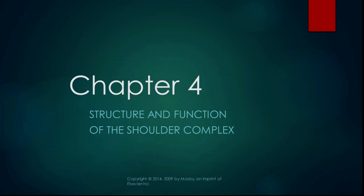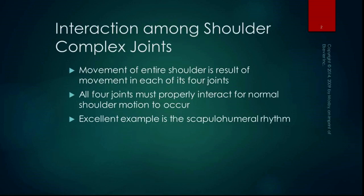This is the last part of the shoulder chapter, where we bring it all together and talk about functional considerations. The movement of the entire shoulder is a result of movement in each of its four joints — the sternoclavicular joint, the acromioclavicular joint, the scapulothoracic joint, and the glenohumeral joint — and all four have to interact properly for normal shoulder motion to occur.